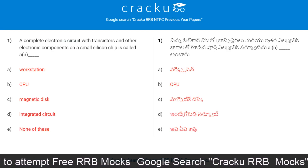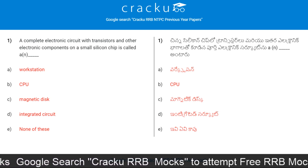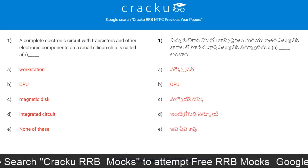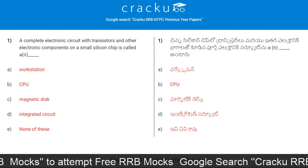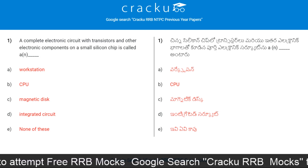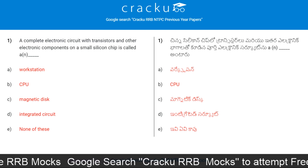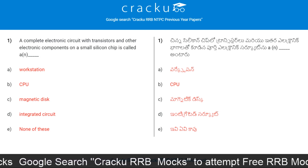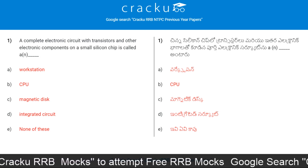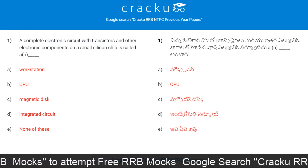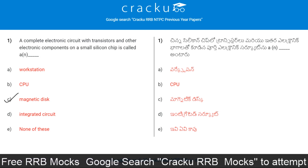Today's first question. Pause the video and try to guess the answer. A complete electronic circuit with transistors and other electronic components on a small silicon chip is called: Workstation, CPU, Magnetic Disk, Integrated Circuit, or None of these. The correct answer is Option C, Magnetic Disk.